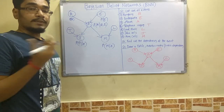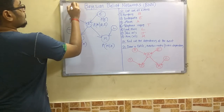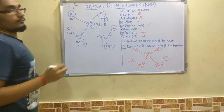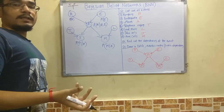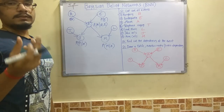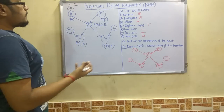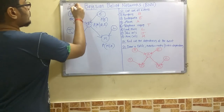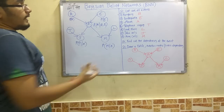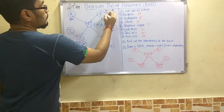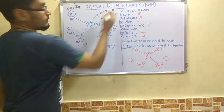We assign probability values using true/false tables. For burglary, the probability of true is 0.001 and false is 0.999, since burglary should be rare. For earthquake, the probability of true is 0.002 and false is 0.998, similarly kept low. These are demonstrational values and can be changed.